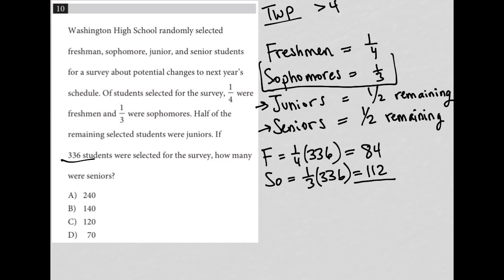So all together, freshmen and sophomores were 196 students. Well, the remaining part here, the juniors and seniors are based upon a fraction of the remaining number of students. Well, if we have 336 to start off with, but 196 are freshmen and sophomores, then we just have to find the difference of those numbers to figure out how many students are left over. So 336 minus 196 is equal to 140.